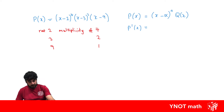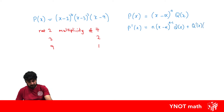Using the product rule, we take the derivative of the first term, which is n(x−α)^(n−1), times the second term q(x), plus the derivative of the second term q'(x) times (x−α)^n. We can then factorize out (x−α)^(n−1).